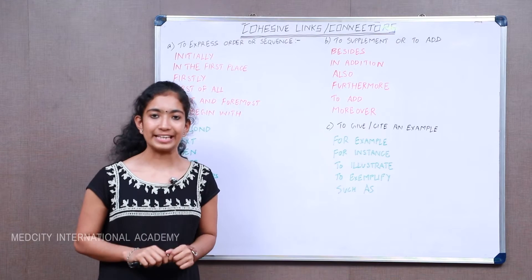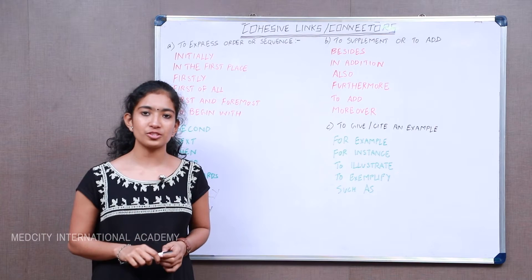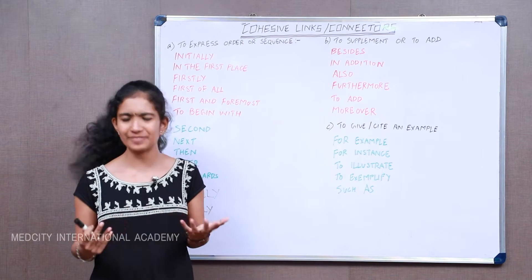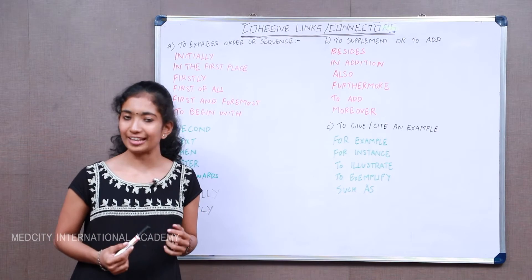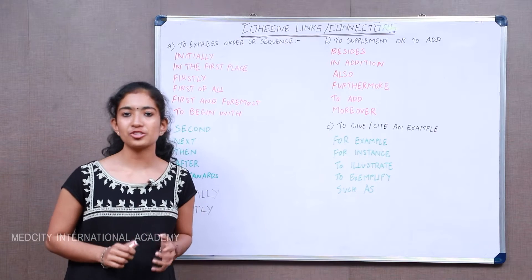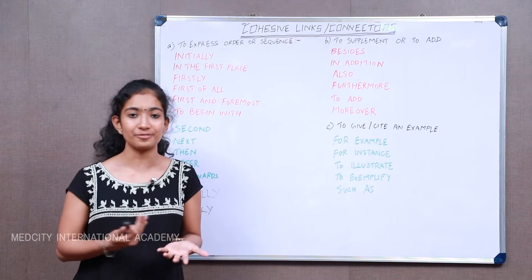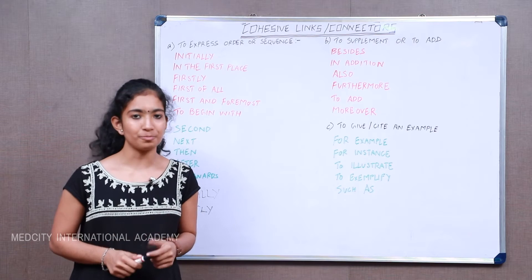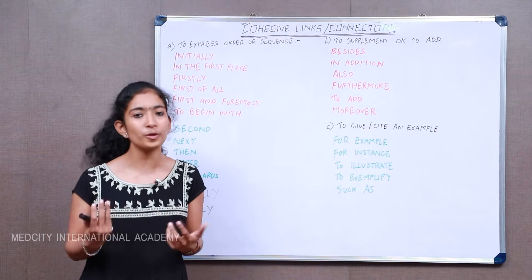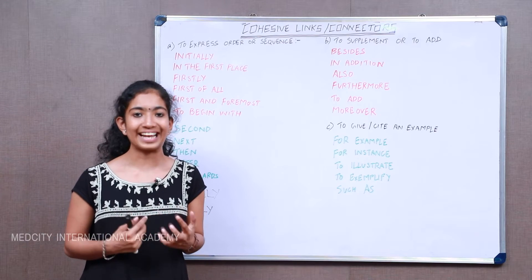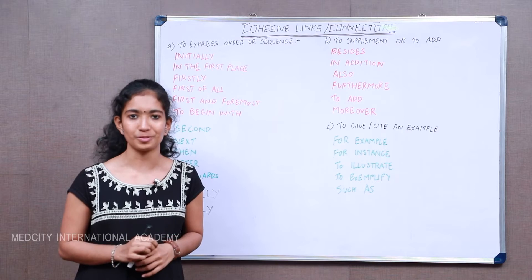So what exactly are cohesive links or connectors? Cohesive links are those words or phrases which can be used to link certain clauses, phrases, and even sentences. Coherence and cohesion accounts for 25% of your final score in IELTS writing. Therefore, you should use cohesion quite accurately and appropriately. Some students have the habit of either underusing or overusing cohesive links, which can cause a negative impact on your writing. So use cohesive links properly and accurately.